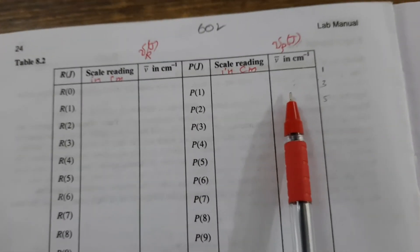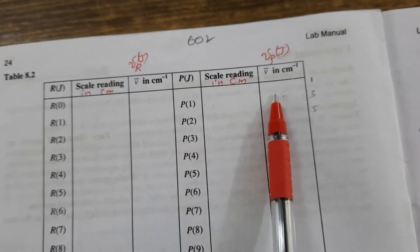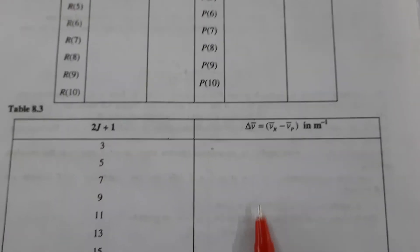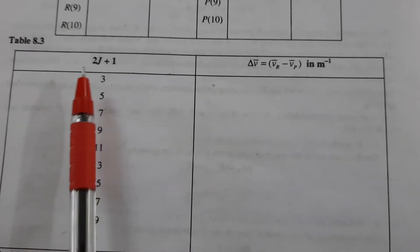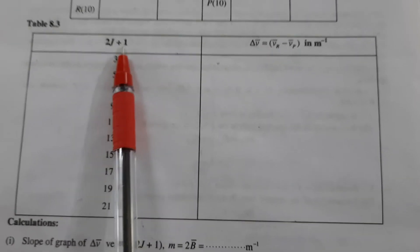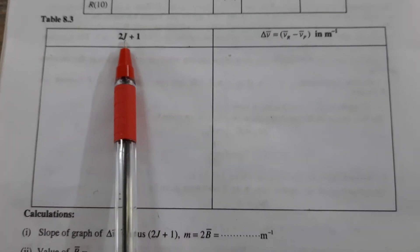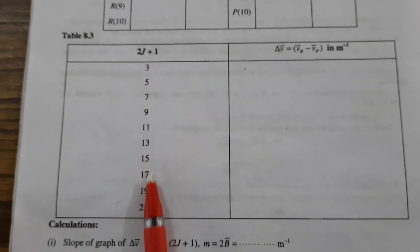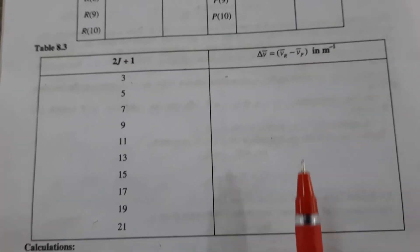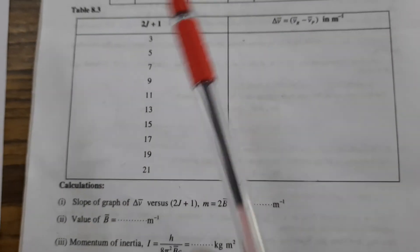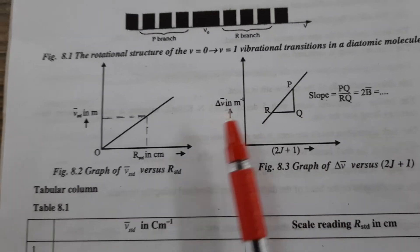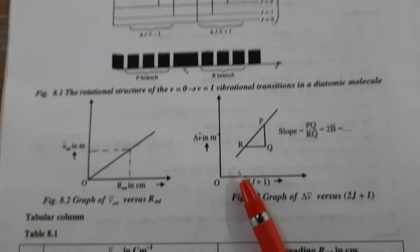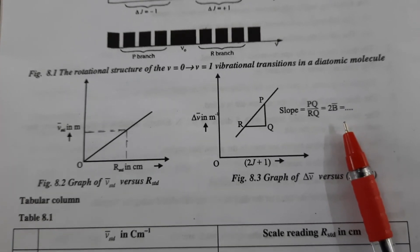We take the difference between the wave number of P1 and R1 — nu_P minus nu_R — and record this as delta nu in the next tabular column, alongside 2J+1. For J equals 1, 2J+1 equals 3; for J equals 2, it equals 5, and so on. We then plot a second graph of delta nu versus 2J+1, which gives a straight line. The slope of this line equals 2B, where B is the rotational constant.